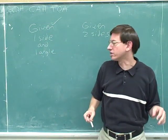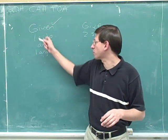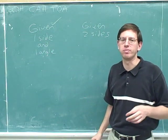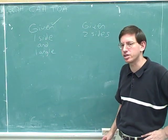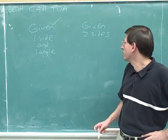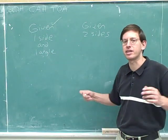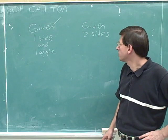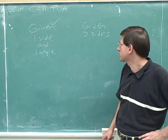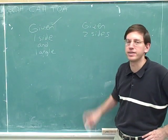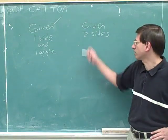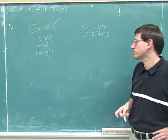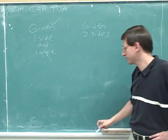Now that we've finished learning how to deal with problems where we're given one side and one angle, we'll proceed to the next type of problem. We want to learn how we can use trig functions when we're given two of the sides and nothing else about a right triangle. When given two sides, we ask ourselves how to use trig functions to find the other information about the triangle.